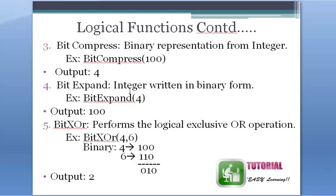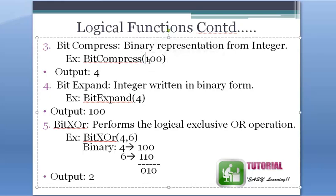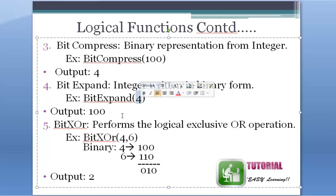Bit compress is simple: if you have a binary code and want to know what numeric value it represents, use bit compress — give the binary code or a column with binary values and it will display the numeric format. Bit expand is the reverse: if you have a column of numeric values and want to know their binary representation, use bit expand — give the column name and it will output the binary format of each numeric value.